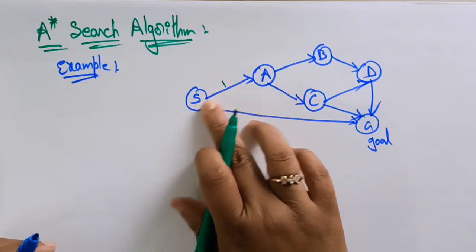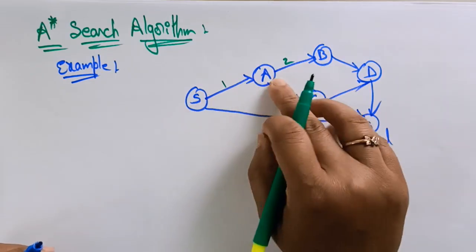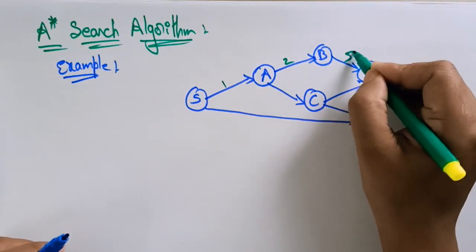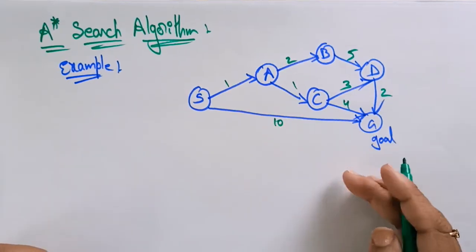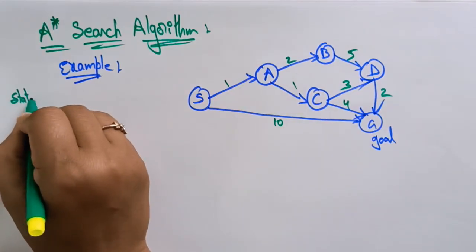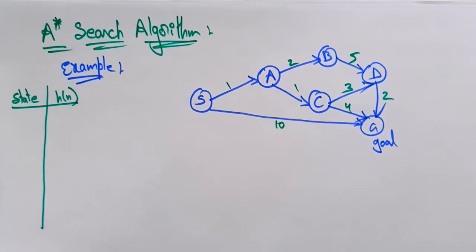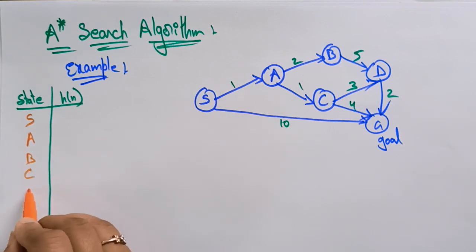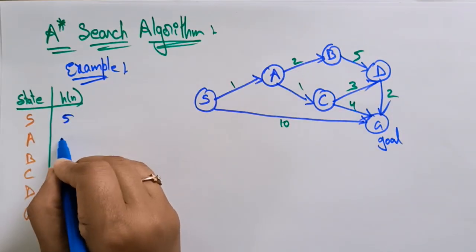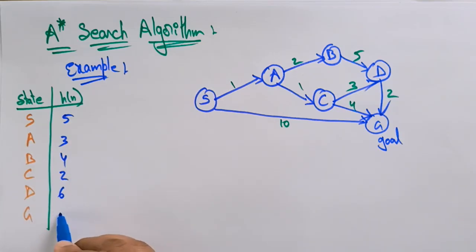For each path, the cost is already given from one node to another, so G(n) can be calculated from the start state. They are also giving the heuristic values for each state: S is 5, A is 3, B is 4, C is 2, D is 6, and G is 0.